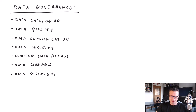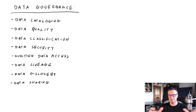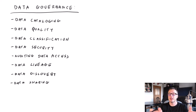Finally, we have data sharing. Data sharing is about sharing your data and collaboration. Let's say you have a dataset with great quality that has been classified as it should, and then some other department in your company would like to get access to it. How do you share it? How do you collaborate together? That's what data sharing is about. Together, all eight key elements create this data governance landscape.